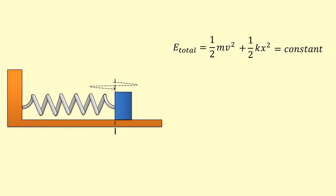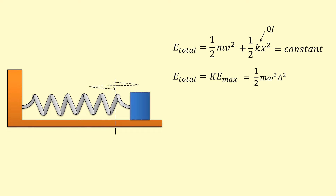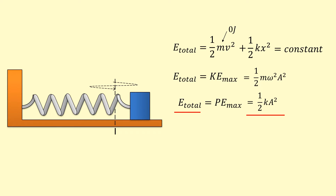When the elastic potential energy is zero — that is, when the spring is at its equilibrium and not stretched — the kinetic energy is at a maximum. The total energy can then be found from ½mv²_max, which equals ½mω²a². Conversely, when the spring is fully stretched and the mass has stopped, kinetic energy is zero and elastic potential energy is at its maximum: ½ka². Once you have the total energy, you can calculate any other energy at any particular point in time.